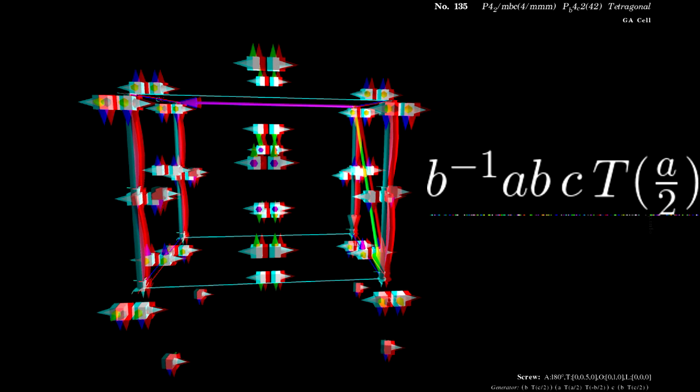Next is the rotation around A by 180 degrees followed by a translation by half A. The rotation is generated by two hyperplane reflections perpendicular to B inverse AB and C.